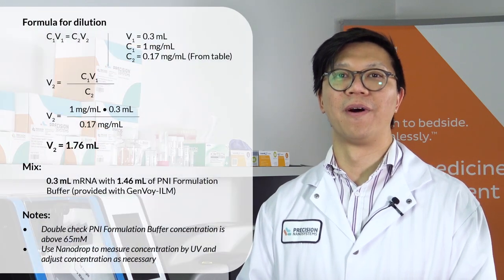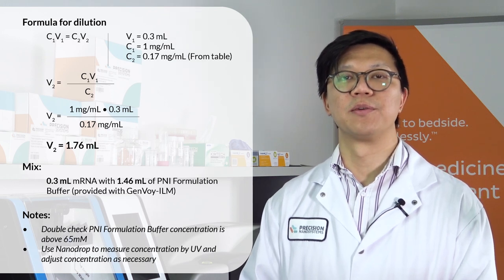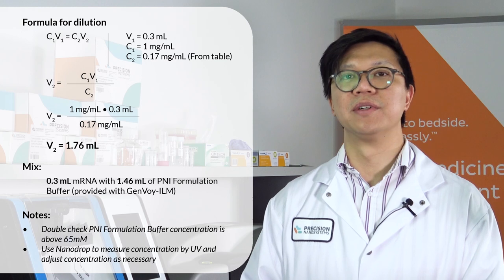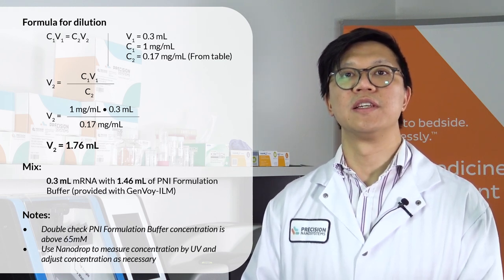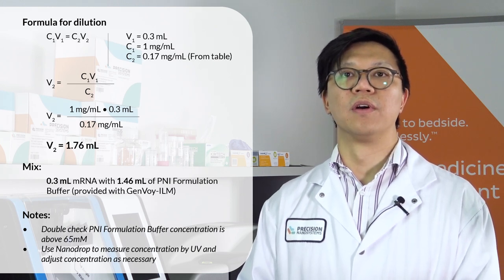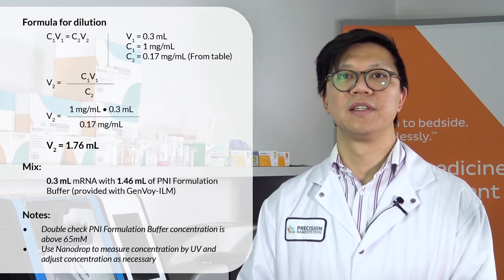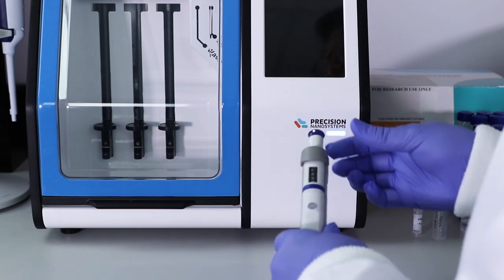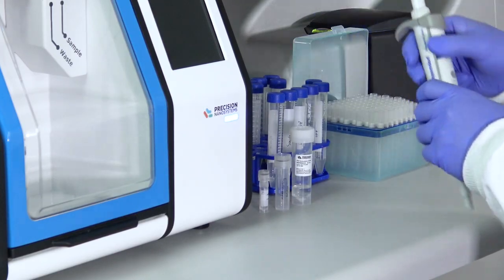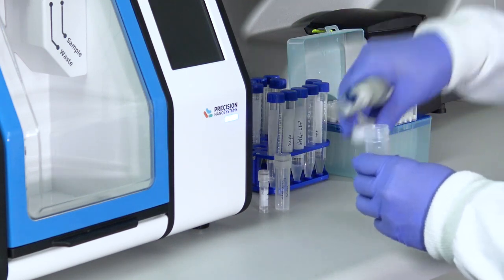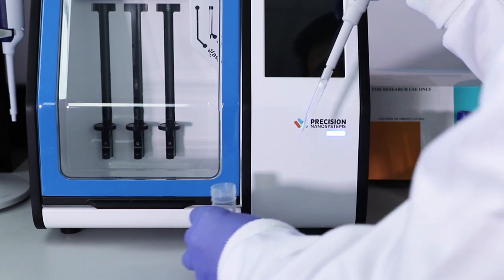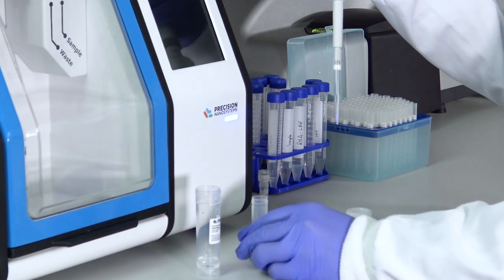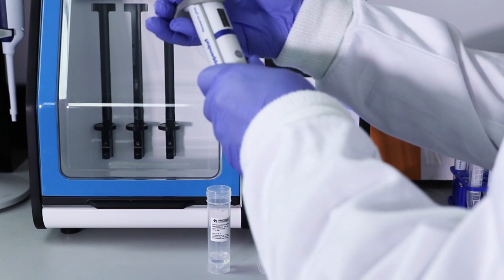Next, we'll be calculating the dilution of your mRNA in the formulation buffer. We're going to encapsulate 0.3 mg of mRNA and calculated that will be 0.3 milliliters. Our final concentration from the table needs to be 0.17 mg per mL. Using this dilution formula and rearranging for V₂, you'll see that we'll need a final volume of 1.76 mL. That means we'll be mixing 0.3 mL of mRNA with 1.46 mL of PNI formulation buffer. We'll start by pipetting the PNI formulation buffer first.